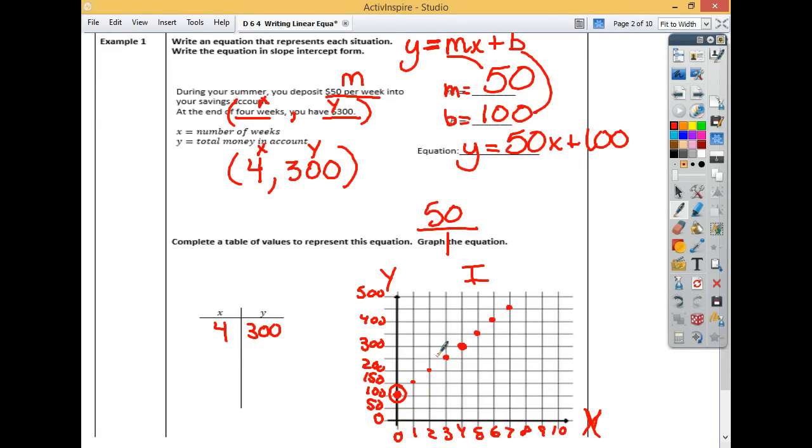So how much money did you have in week 7? After seven weeks of summer working and depositing $50. How much money did you have in week 7? You can tell by two ways. You can tell by looking at the graph here. Week 7, how much money did you have? $450. Does that work in here? What is 50 times 7 plus 100? What's 50 times 7? 35 and that is 0. What's 350 plus 100? 450. So either way it works.